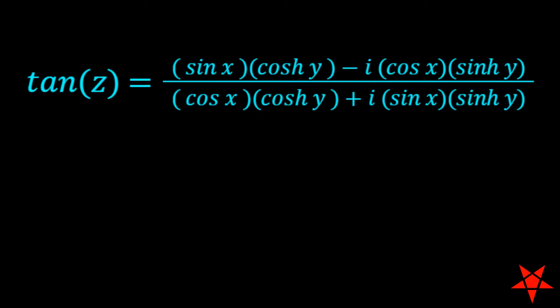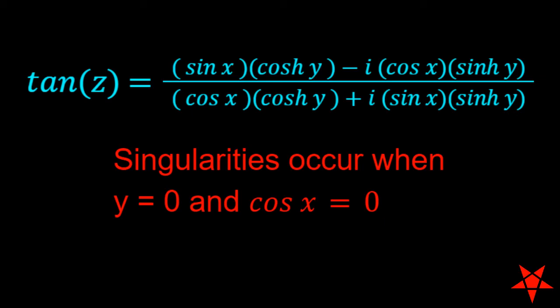So with the denominator of tangent of z equal to cosine of x on the real axis, the zeros in the denominator can be found using cosine of x equals zero. This gives us x equals πn + π/2 where n is any integer your little heart desires.